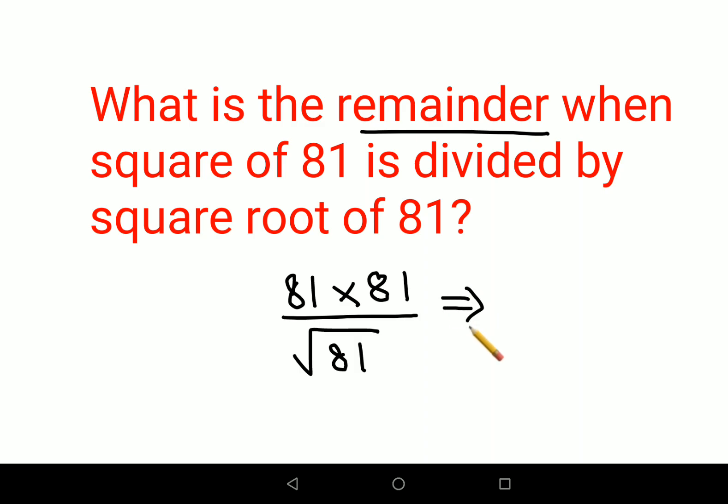That means they are saying 81 into 81 is divided by square root of 81. Now all of us know that square root of 81 is just 9.